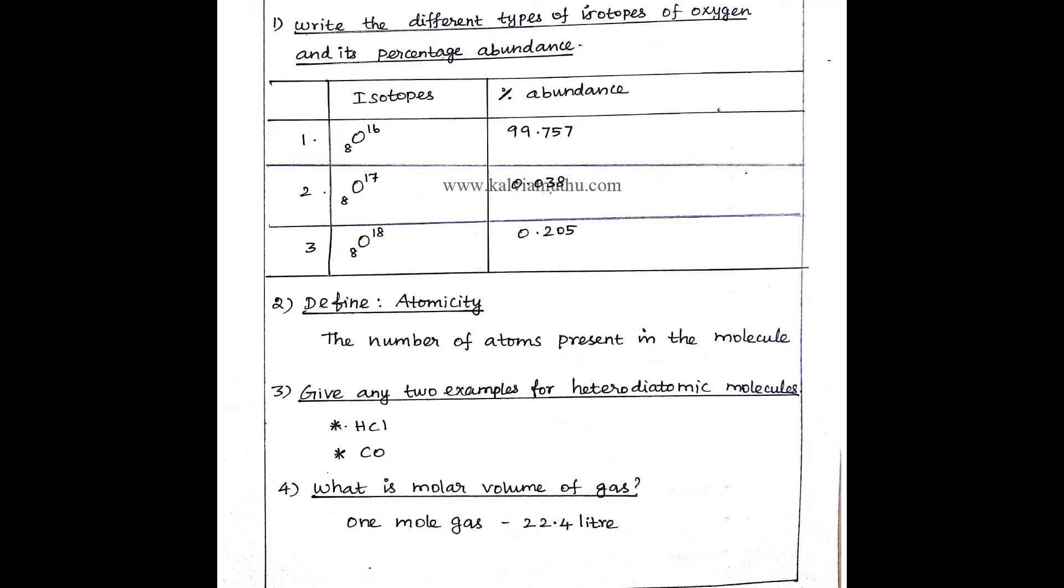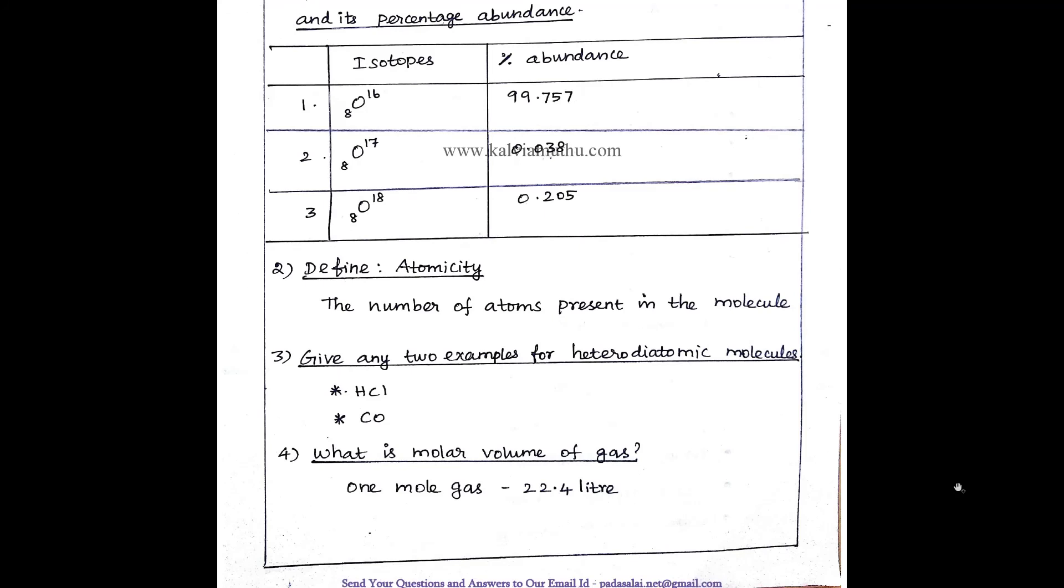Give any 2 examples for heterodiatomic molecules. HCl, CO. HCl is hydrochloric acid. CO is carbon monoxide.